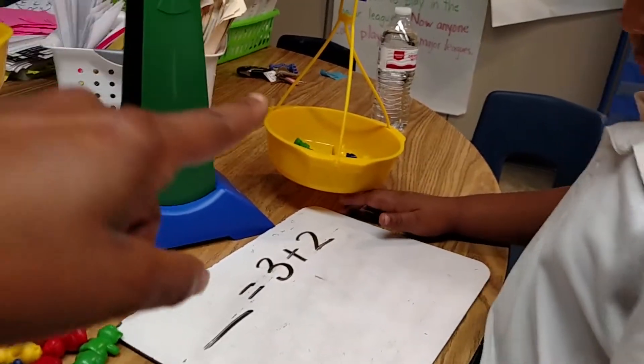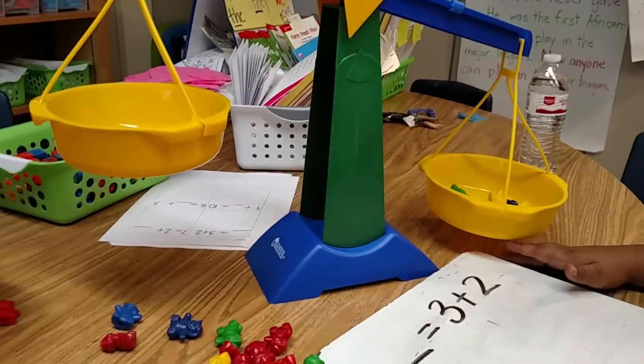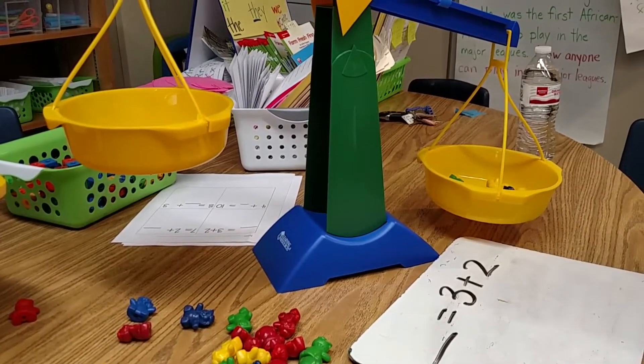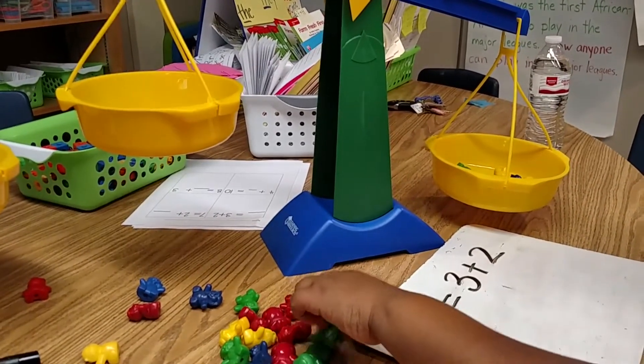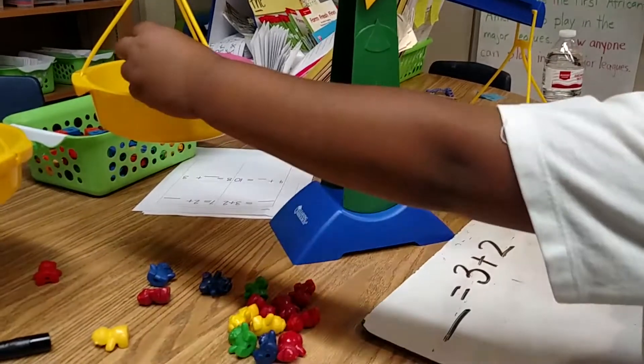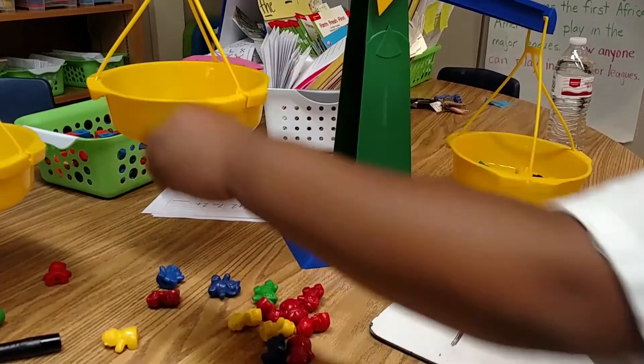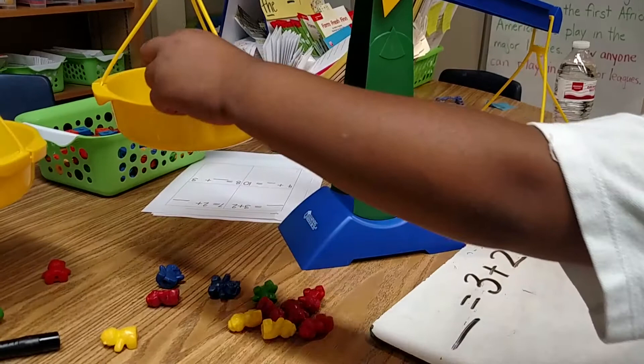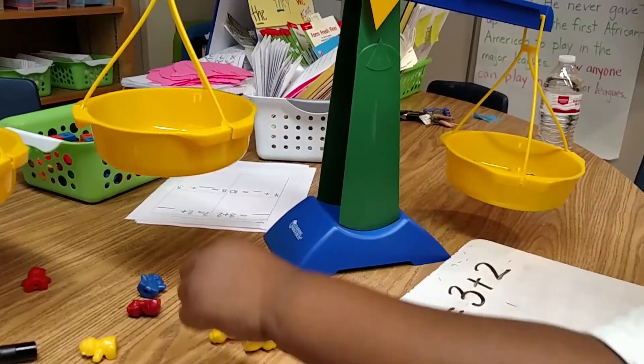So now we've got to get this side to balance with this side. What do you think you have to add to this side to make it balance? 5 more. Try it. 5 more, 4, 5. Count it. 1, 2, 3, 4, 5.